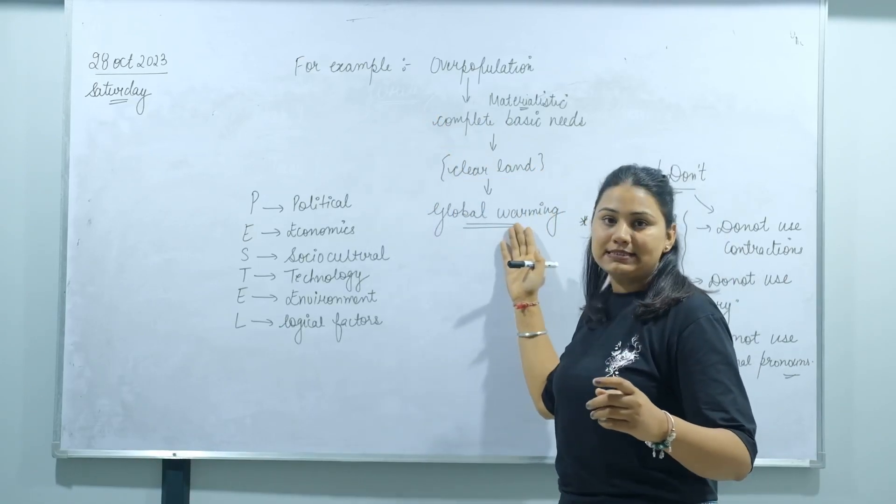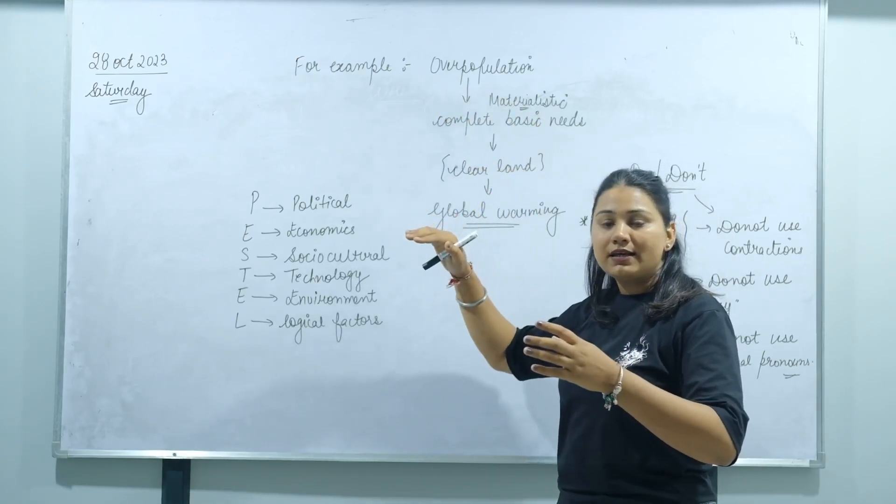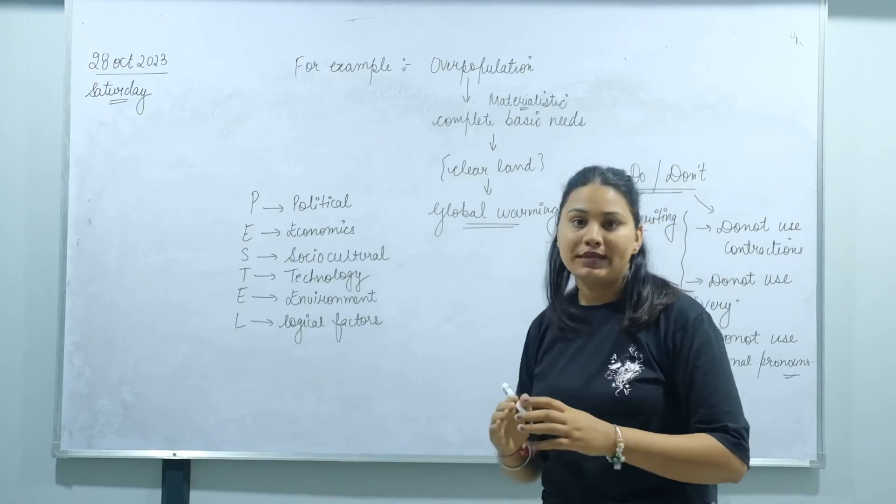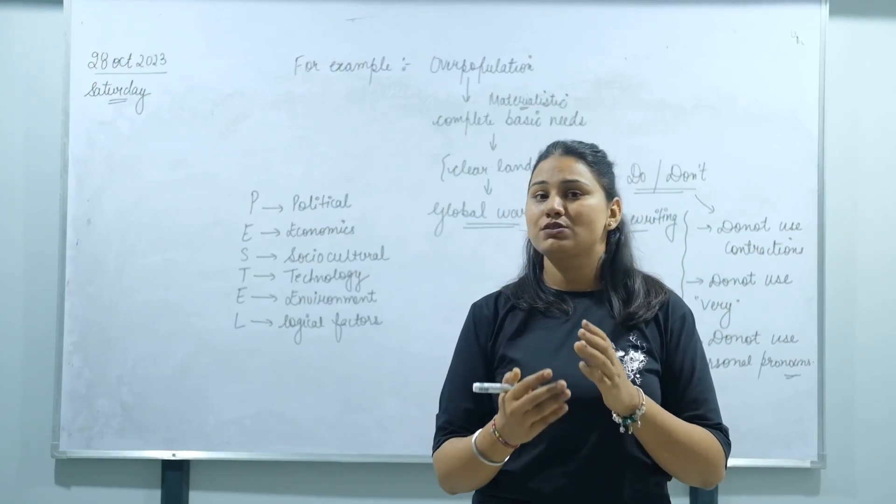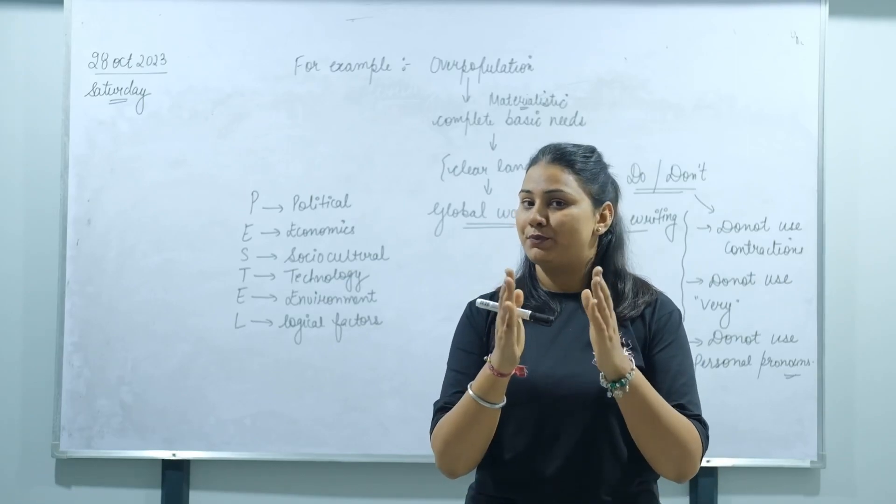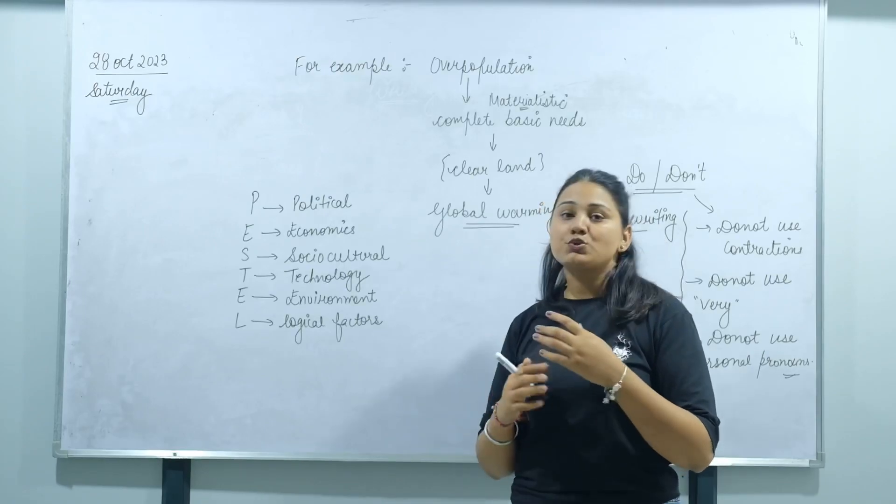So you make the main point, provide explanation, add a suitable example, and show the result. Overpopulation leads to materialistic needs, land clearing, and ultimately global warming increases. This is the PEEP method. I think this could be beneficial for you to organize your body paragraphs. Now, let's move towards how to develop ideas.